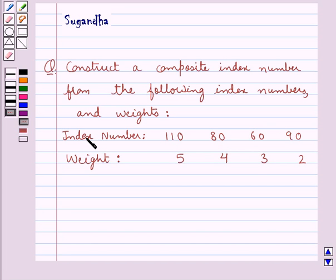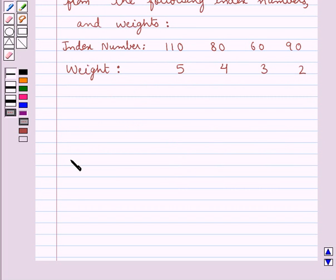We are given the index numbers as 110, 80, 60, 90 and the respective weights as 5, 4, 3 and 2. Now consider n quantities,